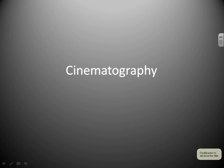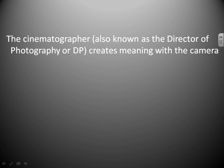Cinematography is the process of capturing moving images on film, including the use of effective light, accurate focus, careful composition or arrangement, and appropriate camera movement. The cinematographer, also known as the director of photography, or DP, creates meaning with the camera.